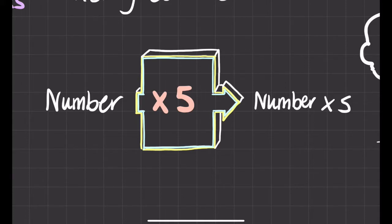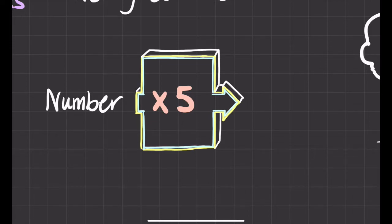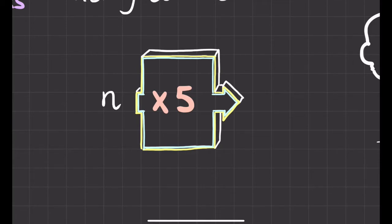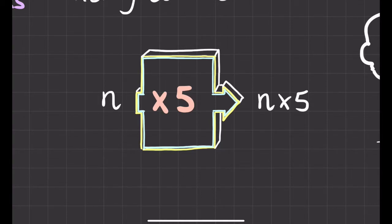That is basically algebra, but it takes a long time to write out words. So I'm going to change this for a letter instead — why don't we call it n, n for number. So whatever our number is, we put it into our function machine, and the function machine says: I've got a number n, whatever it is, we'll times it by five. So we have the number n and we times it by five — that's what we'll get out as our answer.